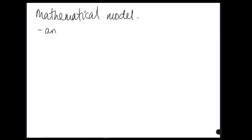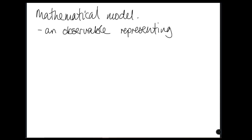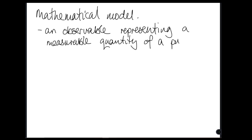Some preliminary stuff about the mathematical model. What I care about here is that you have an observable, which represents some measurement you care about on a system. The ones you typically get introduced to first are position and momentum of a particle. There are other ones like spin of an electron — up-down is a typical one — or energy state of electrons in electron shells. An observable represents a measurable quantity on a physical system.